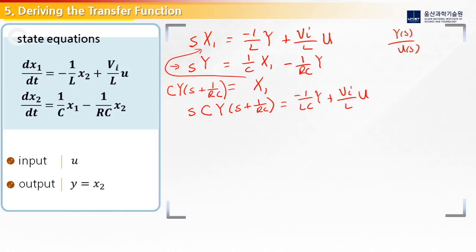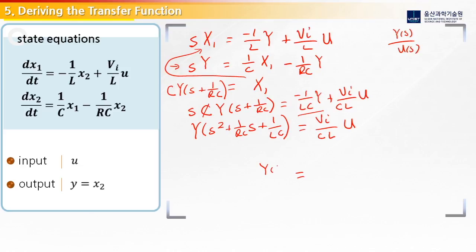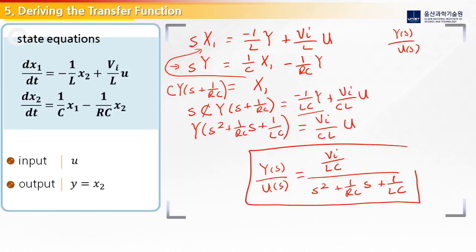Then we move the LC term over. Next, we move the y term to the left side and put all the y's together. If we do this, we get s squared plus 1 over RC times s plus 1 over LC, all multiplying y, equal to Vin over CL times u. Now we can simply rearrange our terms to get y over u, and our final transfer function is Vin over LC, all over s squared plus 1 over RC times s plus 1 over LC. So here is our transfer function for our system.